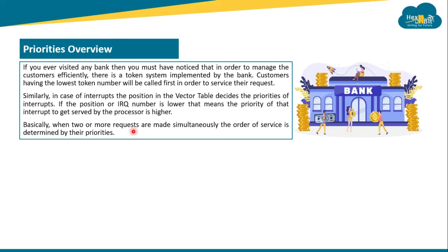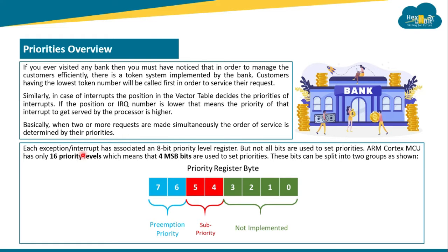Each exception or interrupt has an associated 8-bit priority level register, but not all bits are used. The ARM Cortex MCU has only 16 priority levels, which means only 4 most significant bits (MSB) are used to set priorities. These 4 bits are further divided into two groups: preemption priority and sub priority. The remaining 4 bits are not implemented.